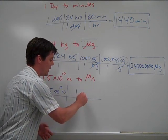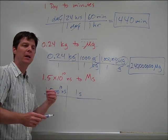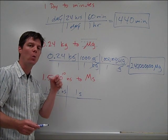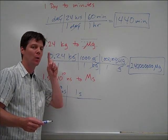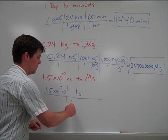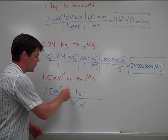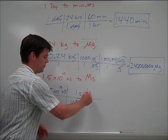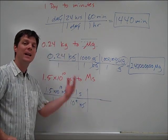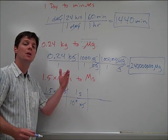Nano means one one-billionth. So I need to know how many nanoseconds are there in one second. Because one nanosecond is one one-billionth of a second. In one second, there will be one billion nanoseconds. I'm just going to write that as 10 to the 9th. Nanoseconds cancels with nanoseconds.